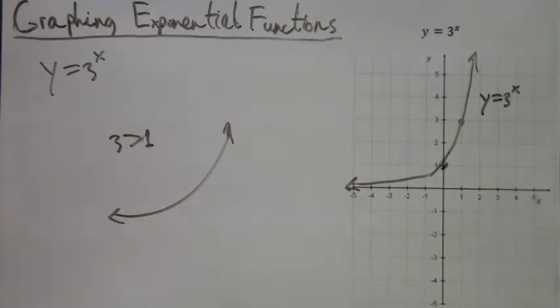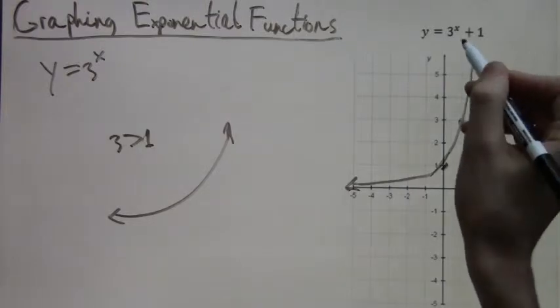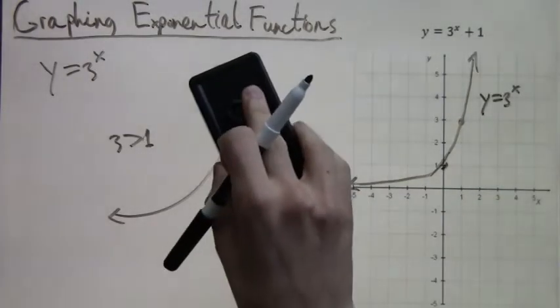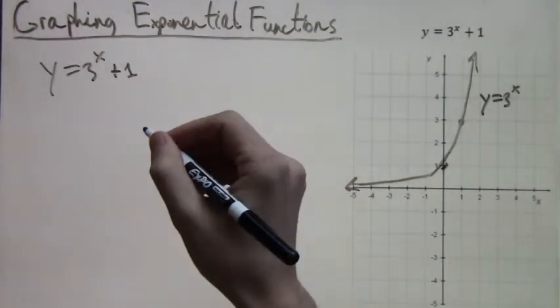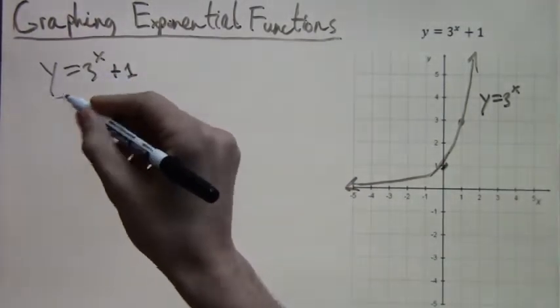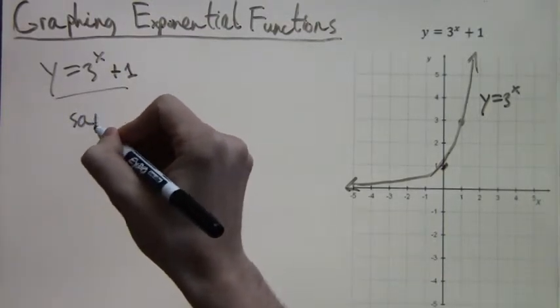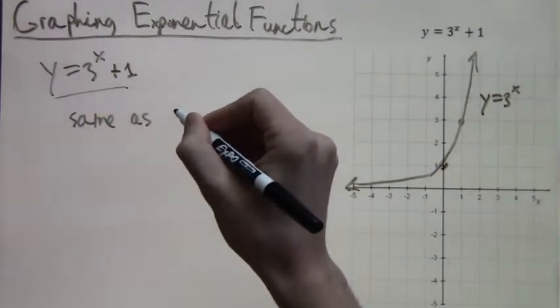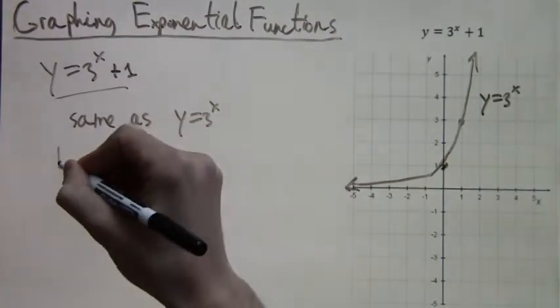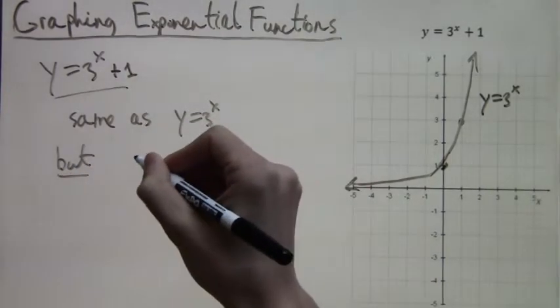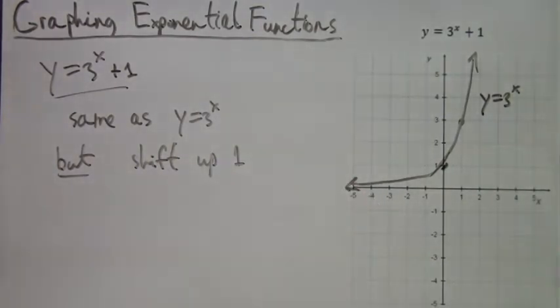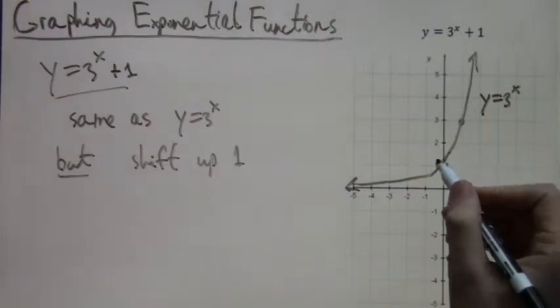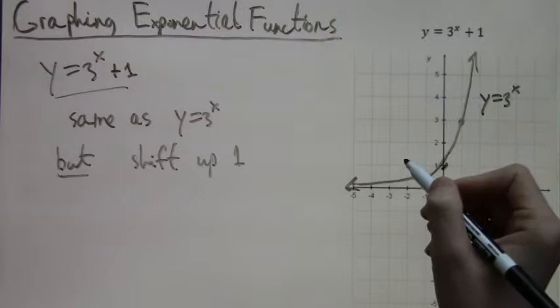So now we're going to look at the next example, y equals three to the x plus one. This graph will be very similar to the one that we already have drawn. It's actually the same equation, the only thing we've done is just added one to it. And what adding this one means is shifting the graph by one up. So since we already have the graph of y equals three to the x, we can just draw one unit higher.